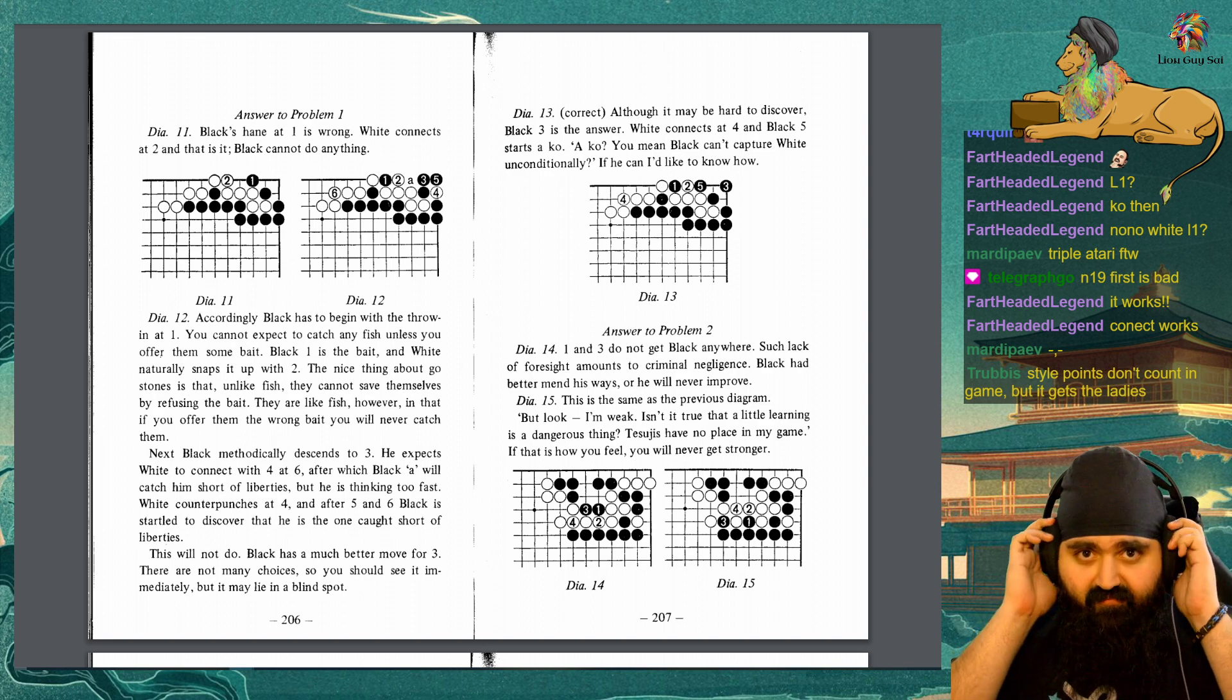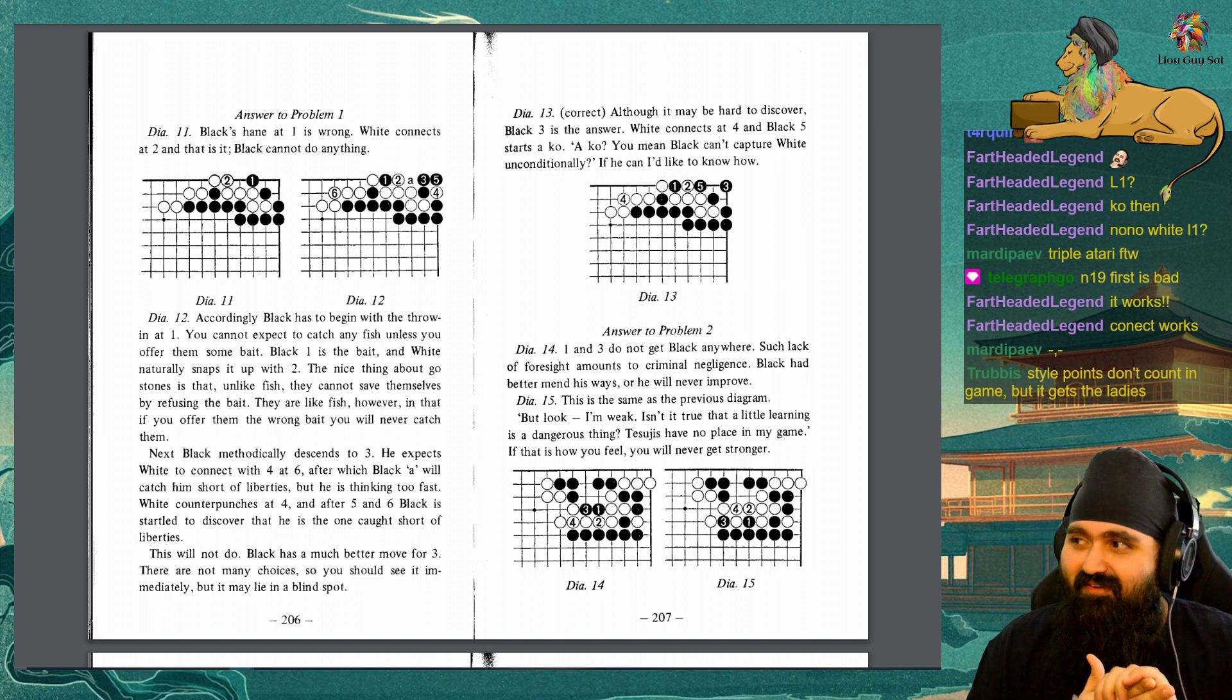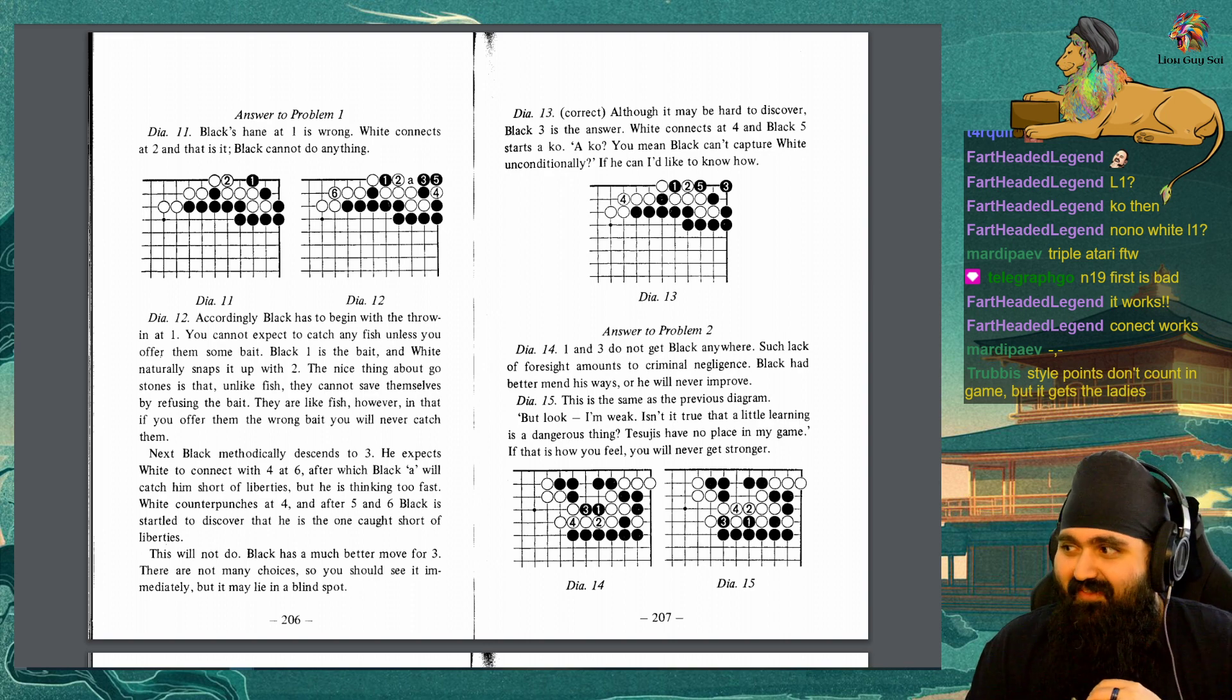Diagram 13: Correct. Although it may be hard to discover, black 3 is the answer. White connects at 4, and black 5 starts a ko. A ko? You mean black can't capture white unconditionally? If he can, I'd like to know how. Answer to problem 2, Diagram 14: 1 and 3 do not get black anywhere. Such lack of foresight amounts to criminal negligence. Black had better mend his ways, or he will never improve. Diagram 15: This is the same as the previous diagram. But look, I'm weak, isn't it true that a little learning is a dangerous thing? Tesuji have no place in my game. If that is how you feel, you will never, never get stronger.